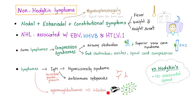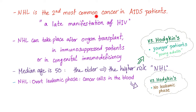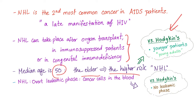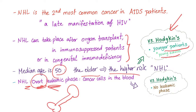In Hodgkin's lymphoma, there is no extra-nodal spread. Non-Hodgkin's lymphoma is the second most common cancer in AIDS patients — it's a late manifestation. It can also occur after organ transplant, in immunosuppressed patients, or in congenital immunodeficiency; what's common is decreased immunity. Median age is 50 years old, and the older you get, the higher the risk. Contrast this with Hodgkin's, where patients are younger, usually young adults. Non-Hodgkin's has an overt leukemic phase because it can involve the bone marrow, and cancer cells can be seen in the blood. Hodgkin's lymphoma has no leukemic phase because it doesn't spread to the bone marrow.